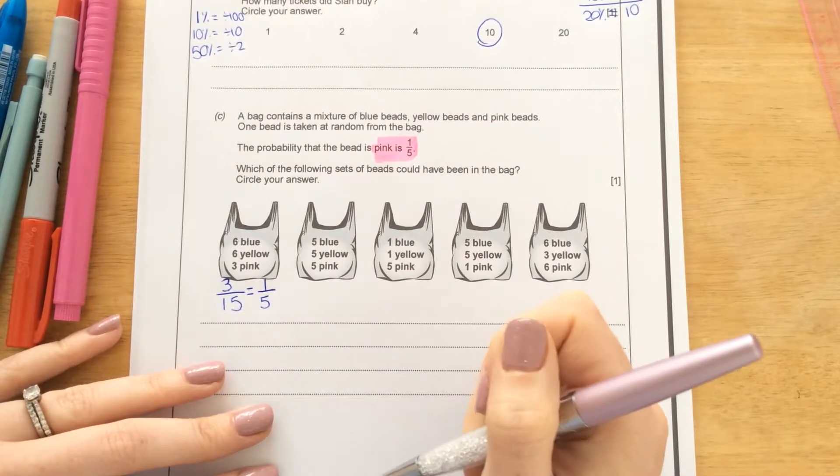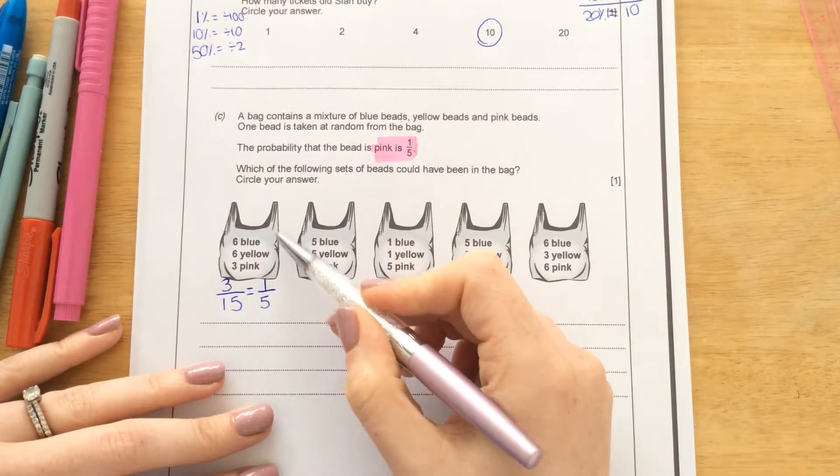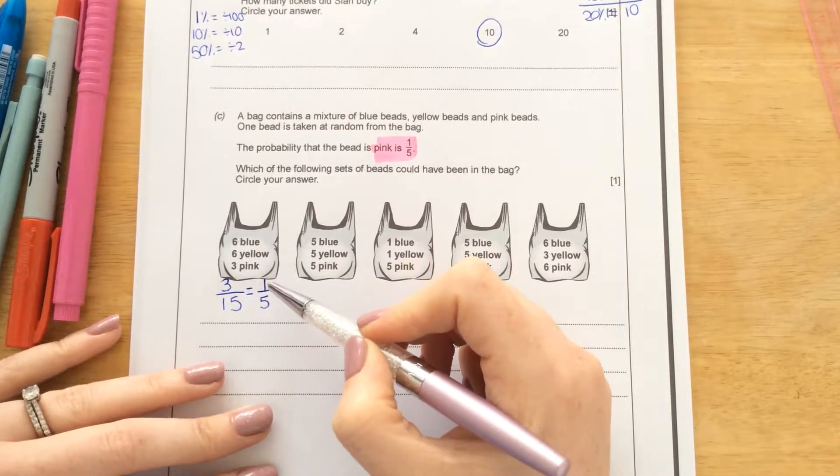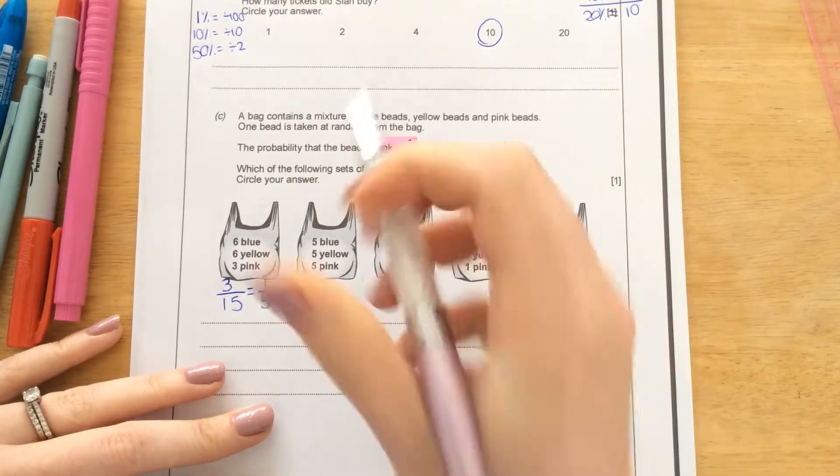So that tells me that 3 over 15 is exactly the same as 1 over 5. These are equivalent fractions. So it's quite nice, it's the first one we've worked out. But this is the bag where the probability of getting a pink bead is 1 over 5.